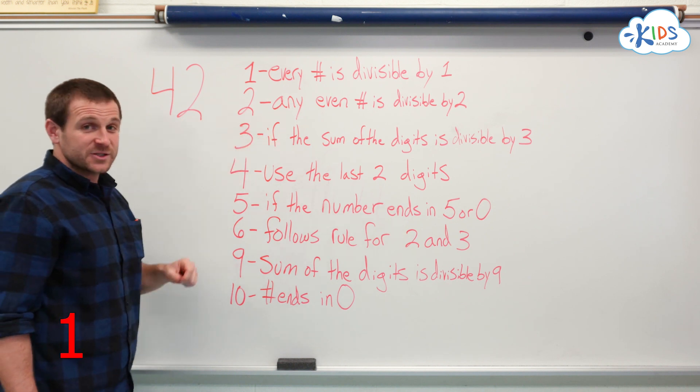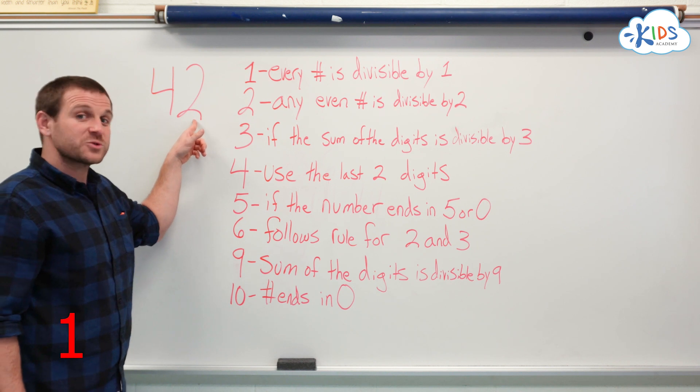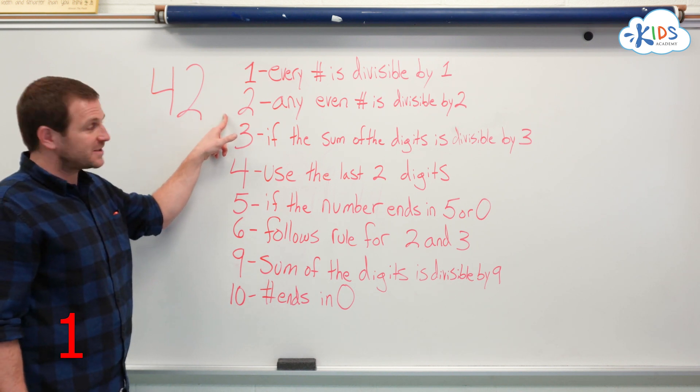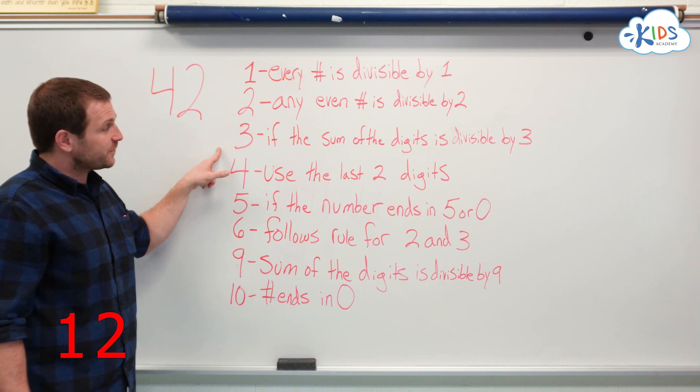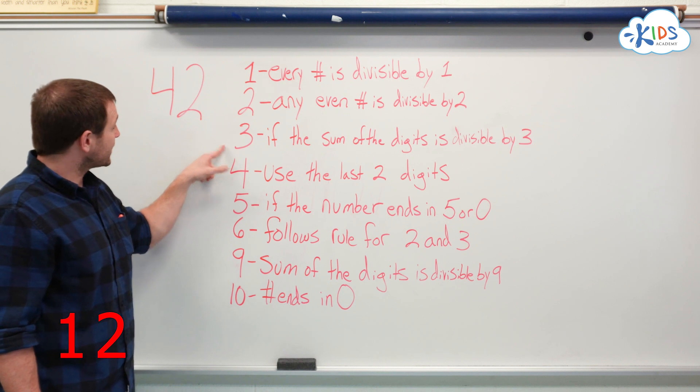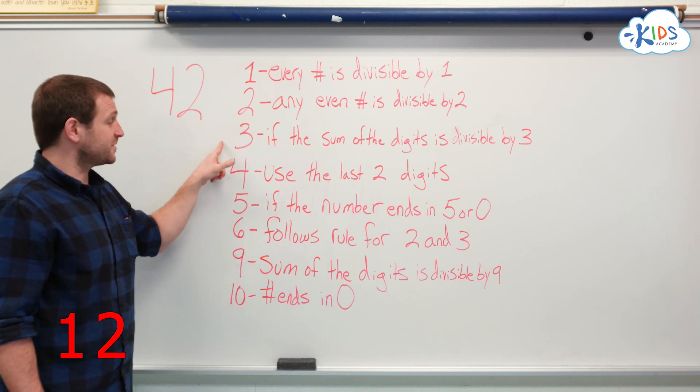Number 2. Any even number is divisible by 2. 42 ends in an even number, which means it's an even number itself. So 42 is divisible by 2. Now we'll go to 3. If the sum of the digits is divisible by 3, it's divisible by 3. 4 plus 2 equals 6. 6 is divisible by 3.